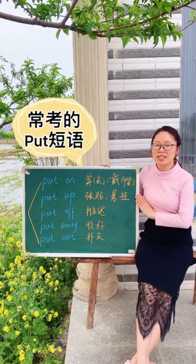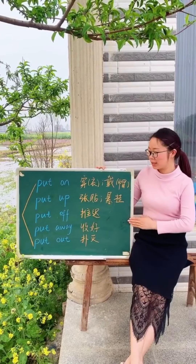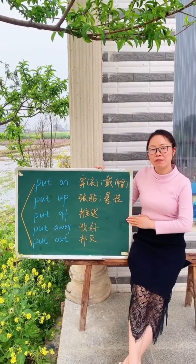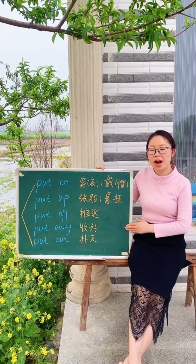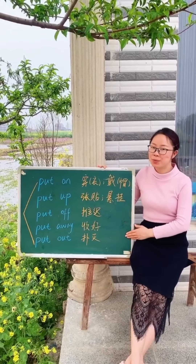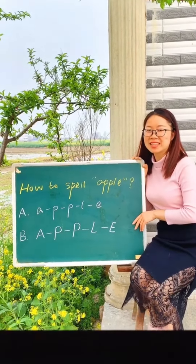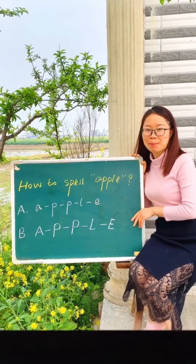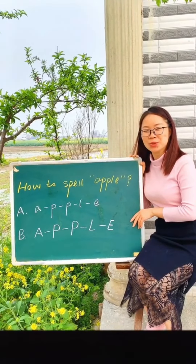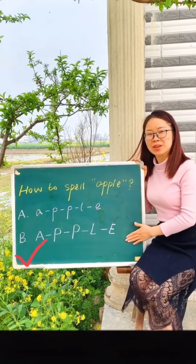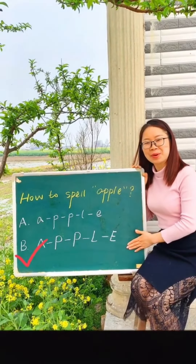Put on，穿衣、戴帽。Put up，粘贴、悬挂。Put off，推迟。Put away，收好。Put out，扑灭。初中高频考点：单词的拼写，How to spell apple？选A还是选B，正确答案是B选项。记得拼写要用大写字母哦。